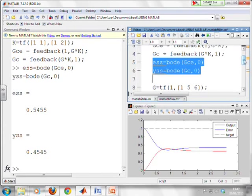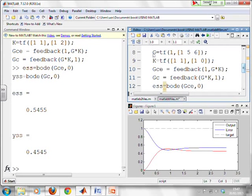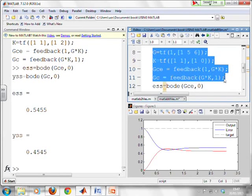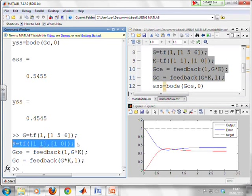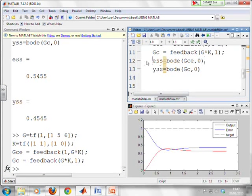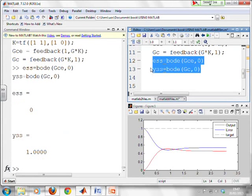Now for completeness, we've got a slightly different example here. You'll notice the most important difference is this K here—instead of putting in 1 comma 2, we've put in an integrator. When there's an integrator, we expect the steady-state error to be 0. Let's calculate the steady-state error and output. ESS is 0, YSS is 1.